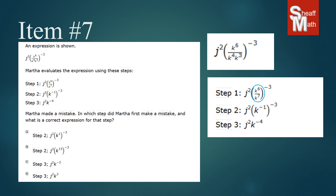The next thing she did — if you look down here — we have k to the sixth divided by k to the seventh in the parentheses. When you divide powers with the same base, you subtract the exponents. So she did that and got k to the negative one, since six minus seven is negative one. This is correct as well — she's made no mistakes so far.